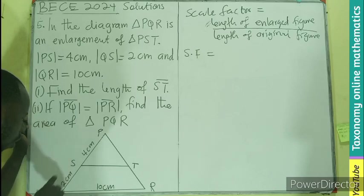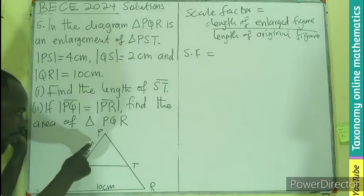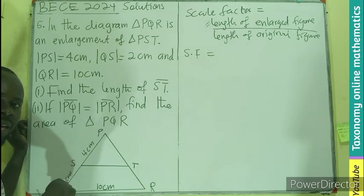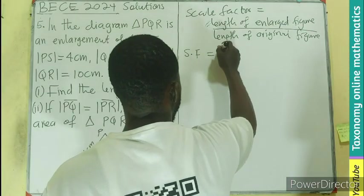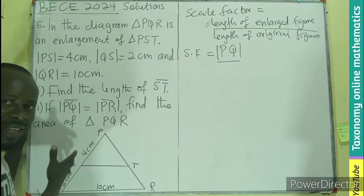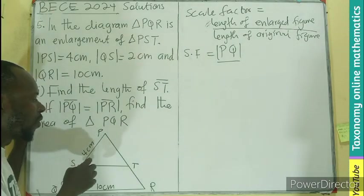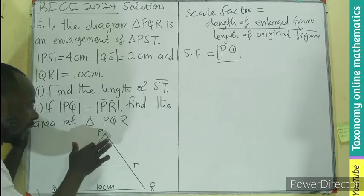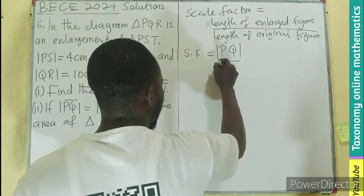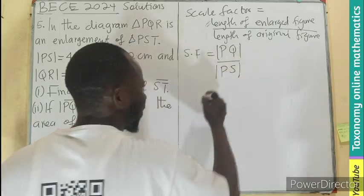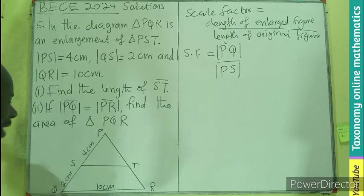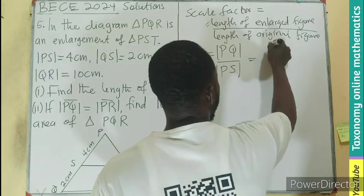I can look at the length from P to Q as the length, the side to the left. The triangle here, the side to the left is from P all the way to Q. That will be around 4 and 2, making 6. So I'll be having PQ divided by the corresponding side, meaning the left side of the original figure, PST, which has this length. So I'll be having PS. So what dimension is there, PQ is 4 plus 2, that will give us 6.